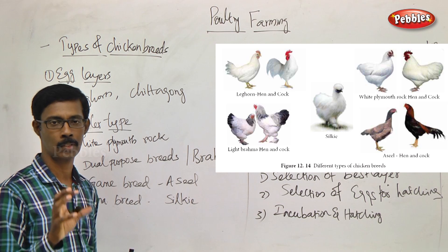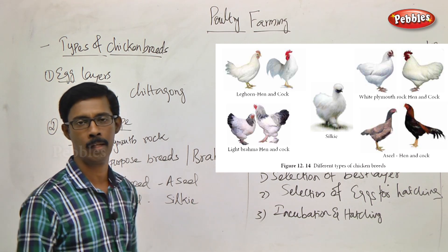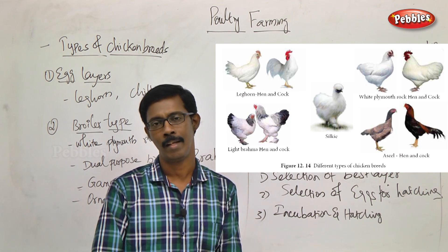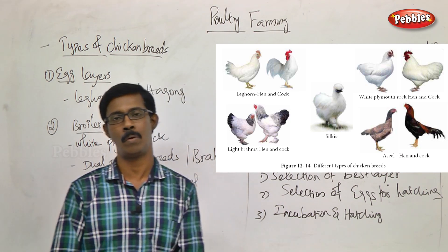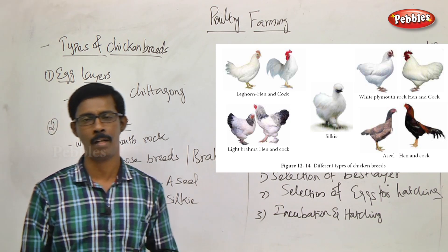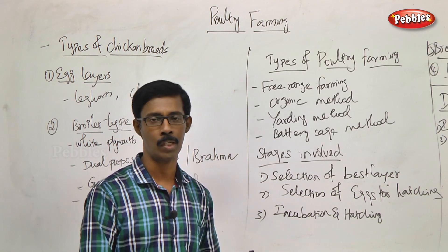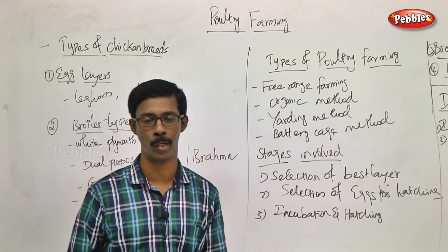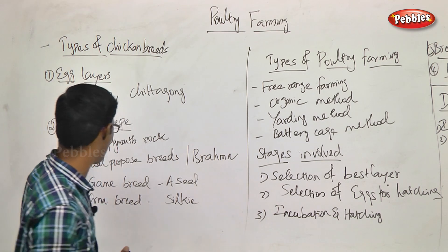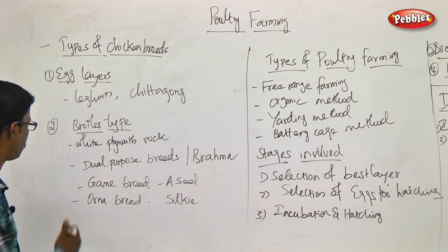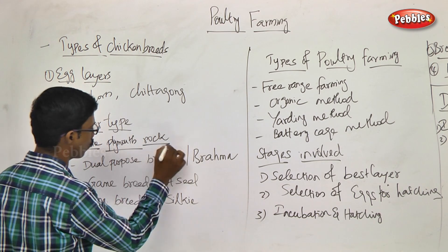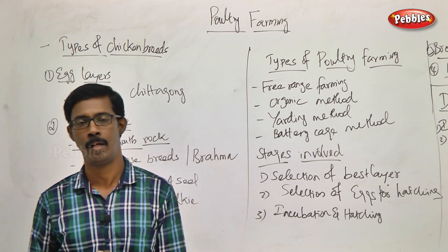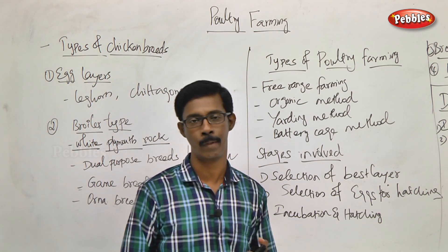For the broiler type, meat is the primary purpose — a lot of body mass. The broiler type grows in a very short period and has high meat content with rapid body mass increase. That is why broiler type is commonly used. One example of a broiler type breed is White Plymouth Rock.